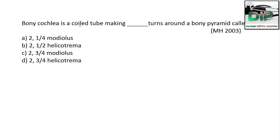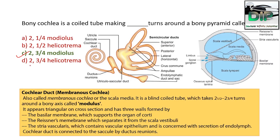Next question. The bony cochlea is a coiled tube making how many turns around a bony pyramid? Option A: 2¼ turns around the modiolus. Option B: 2½ turns around the helicotrema. Option C: 2¾ turns around the modiolus. Option D: 2¾ turns around the helicotrema. The correct answer is 2¾ turns around the modiolus. The cochlear duct or membranous cochlea is a blind coiled tube taking 2½ to 2¾ turns around a bony axis called the modiolus. It appears triangular on cross section. The basilar membrane supports the organ of Corti; the Reissner's membrane separates it from the scala vestibuli; and the stria vascularis contains vascular endothelium that secretes endolymph. The cochlear duct is connected to the saccule by the ductus reuniens.